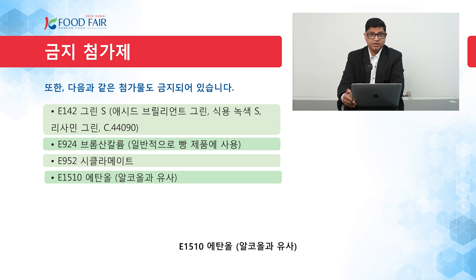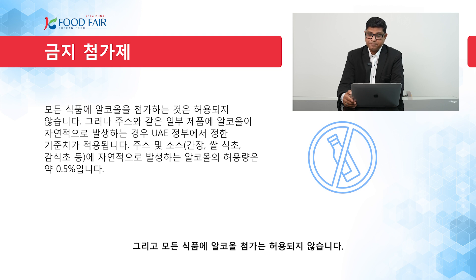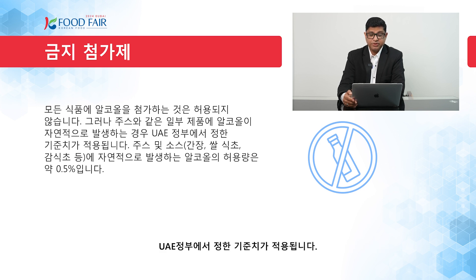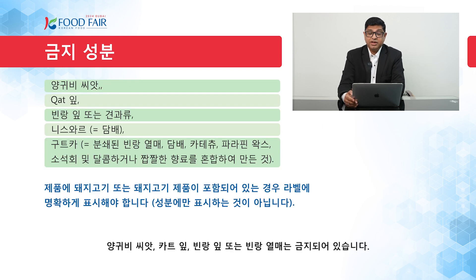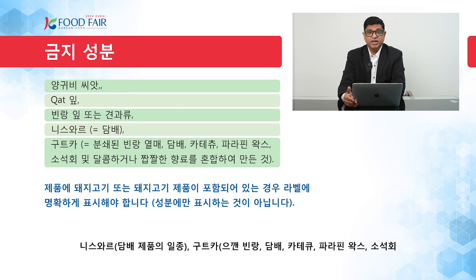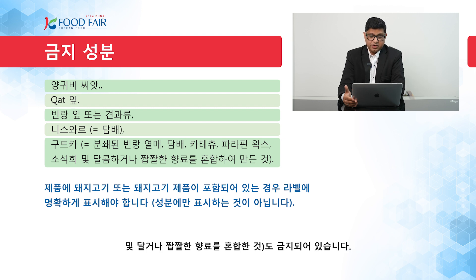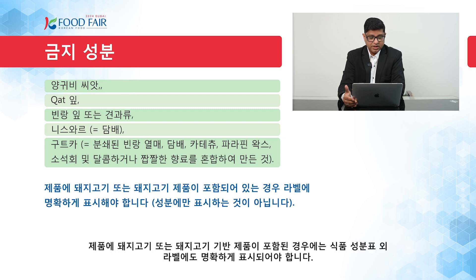Pork products are not permitted and require different procedures. Adding alcohol is not allowed in any food products. However, if alcohol occurs naturally in some products such as juices, it is subject to the limits indicated in the respective UAE standards. The permitted amount of naturally occurring alcohol in juices and sauces like soy sauce, rice vinegar, and sweet vinegar is approximately 0.5%. Some ingredients are also banned: poppy seeds are banned, khat leaves are banned, and betel leaves or betel nuts are banned. Niswar is a kind of tobacco product. Gurkha — a preparation of crushed areca nut, tobacco, ketchup, paraffin wax, slaked lime, and sweet or savory flavorings — is also banned. If any product contains pork or pork-based products, it must be clearly declared on the label, not just in the ingredients list.